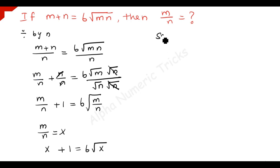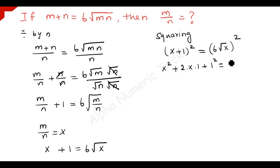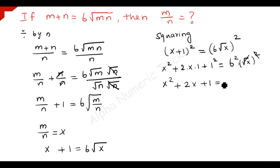Now we have to square both sides. Squaring on both sides, we have x plus 1 the whole square is equal to 6 times square root of x the whole square. Applying the formula a plus b whole square: x squared plus 2 times x times 1 plus 1 squared is equal to 36 times x. So x squared plus 2x plus 1 is equal to 36x.